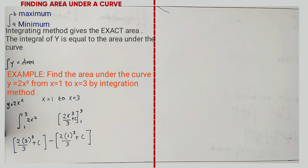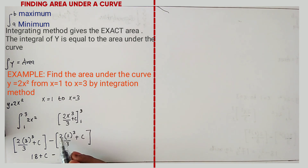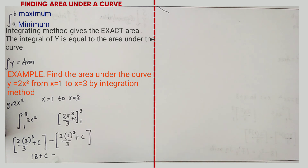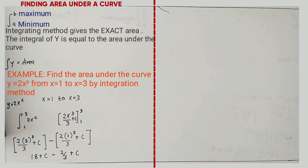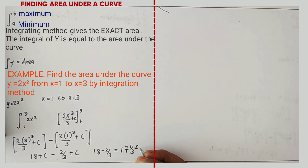It is not necessary to include C in your calculation because the constant of integration cancels out when we subtract. So we have 3³ = 27, divided by 3 is 9, times 2 is 18, plus C. Minus: 1³ = 1, times 2 = 2, so we have 2 over 3, plus C. C and C cancel, giving 18 − 2/3 = 17 and 1/3 square units.